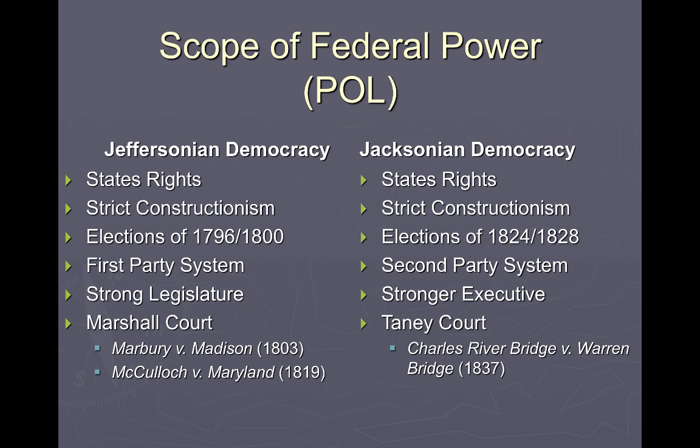Jackson vowed revenge, leading to the election of 1828 — a rematch between Adams and Jackson. It was another bitter, inflammatory campaign with lies thrown on both sides. Jackson won overwhelmingly; the Jacksonian Democrats also took Congress. This was seen as another victory for democracy, echoing the Revolution of 1800.